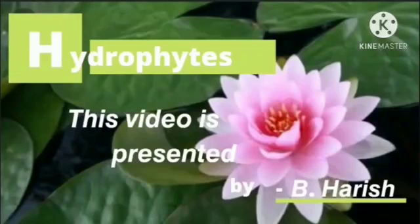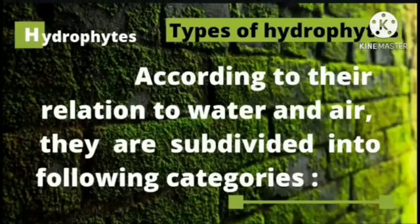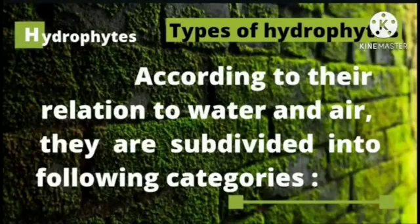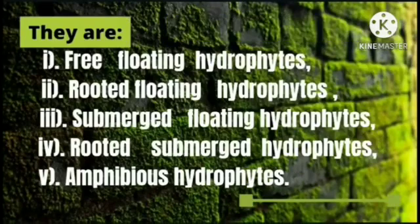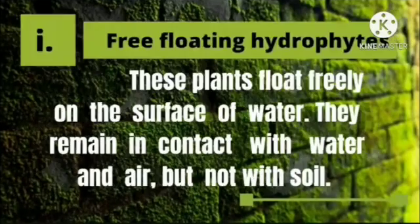Hello everyone. In this video we are going to learn about hydrophytes. Plants which live in water or wet places are called hydrophytes. According to their relation to water and air, they are subdivided into the following categories: free floating hydrophytes, rooted floating hydrophytes, submerged floating hydrophytes, rooted submerged hydrophytes, and amphibious hydrophytes.